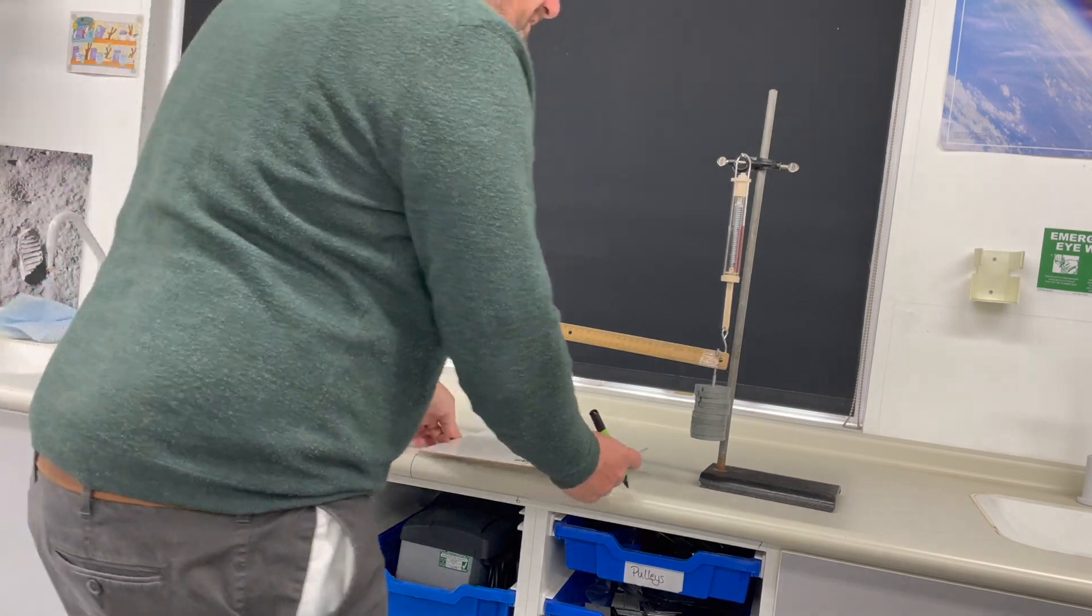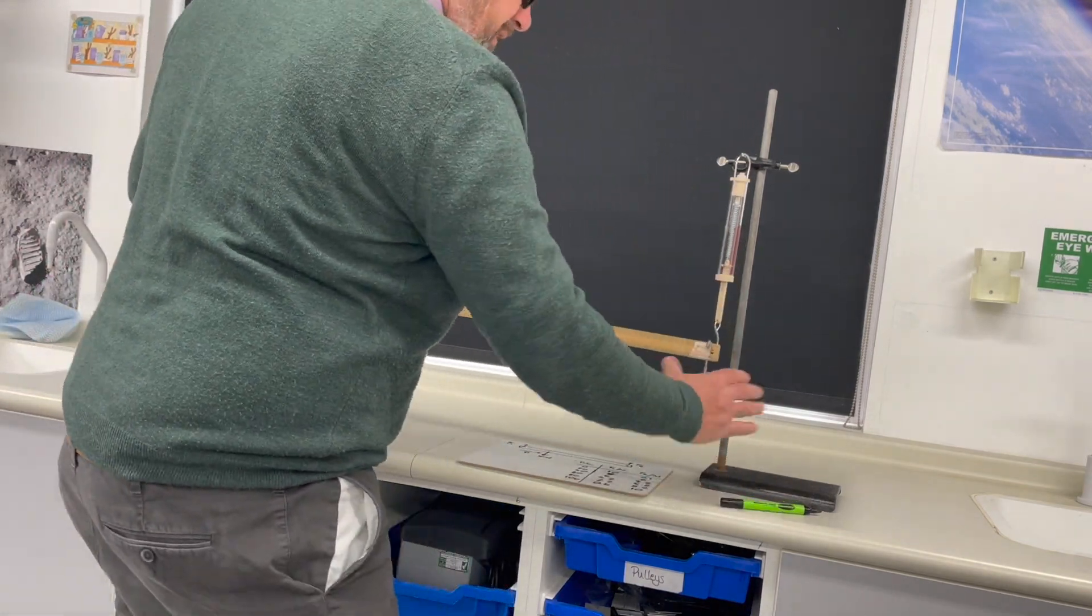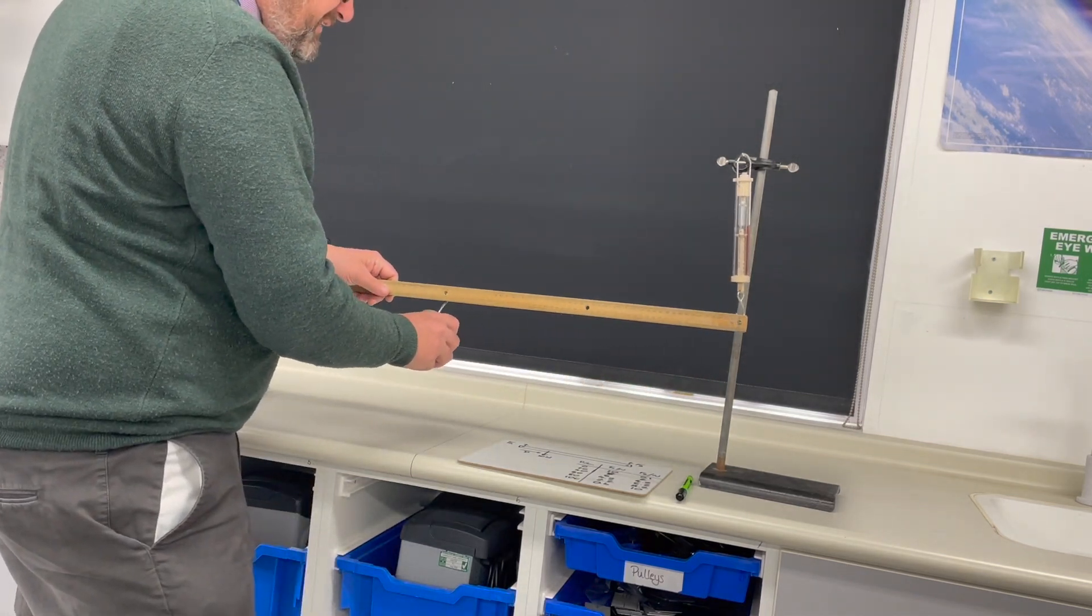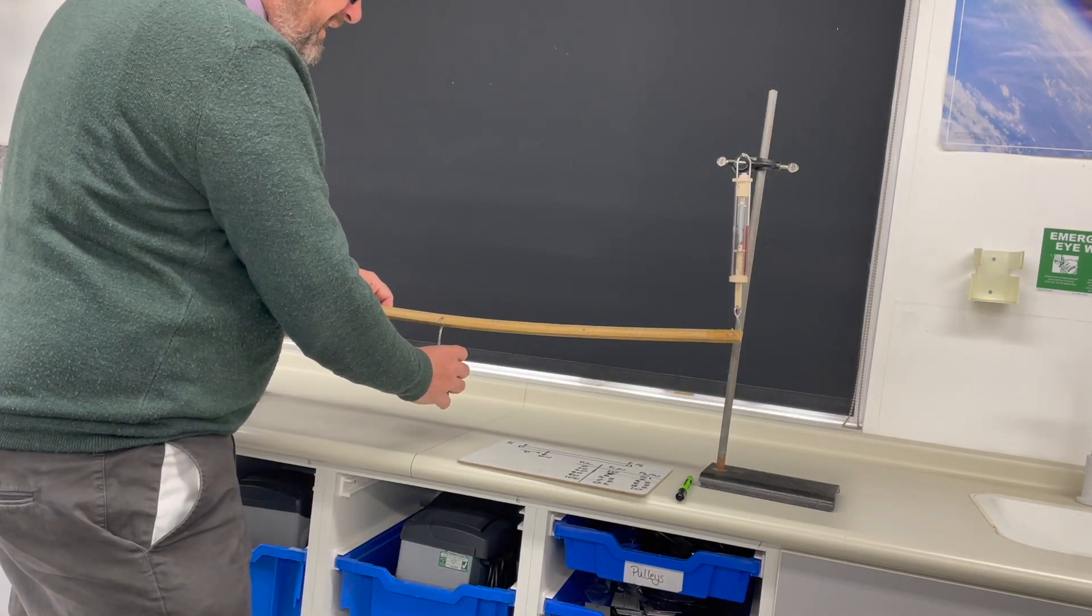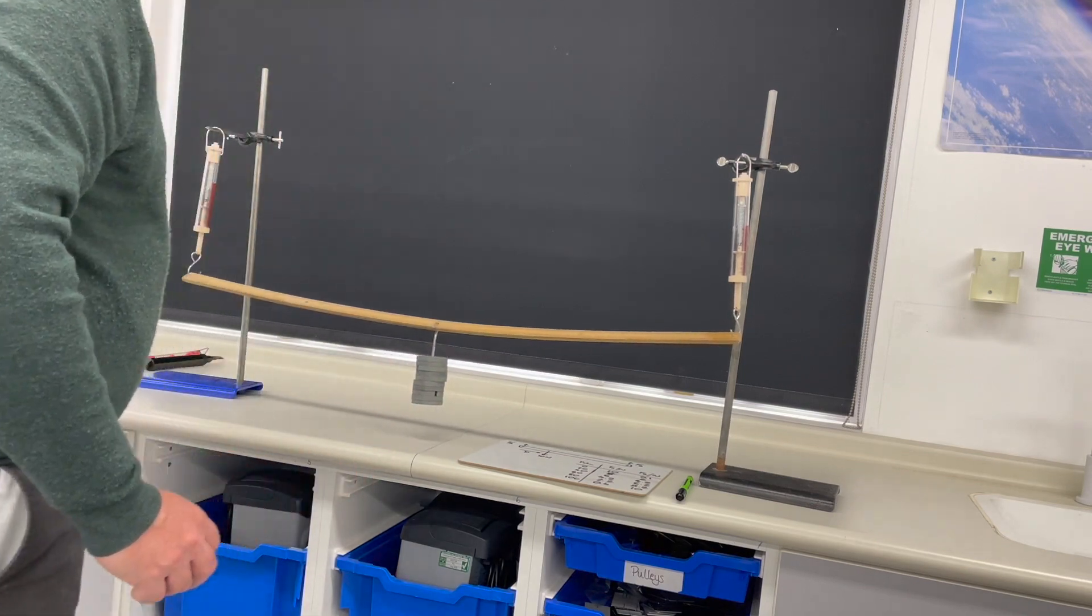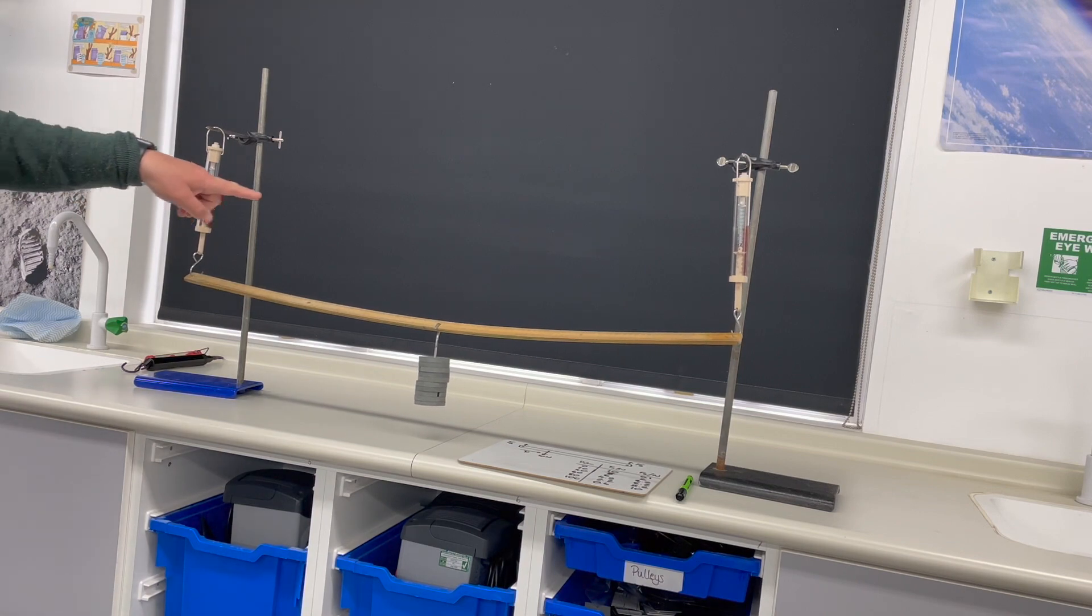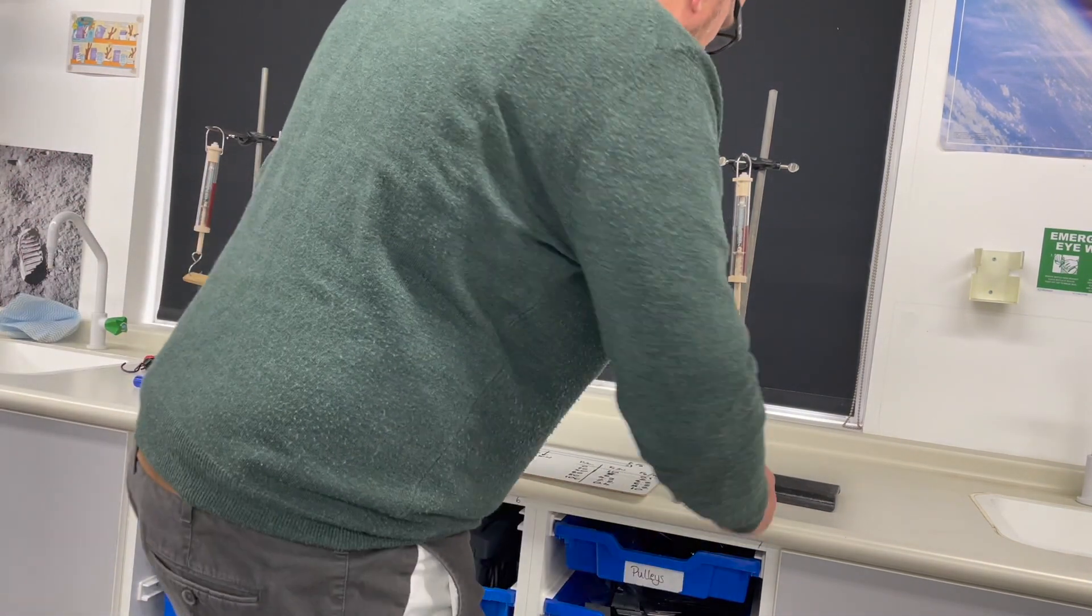Now while I'm here, I'm just going to show you one other thing, and this is just confirming what I'm sure you already know. If I hang the mass from the middle, from halfway along the ruler, then each bridge support supports the same mass. So I have 5 at this end and 5 at that end.